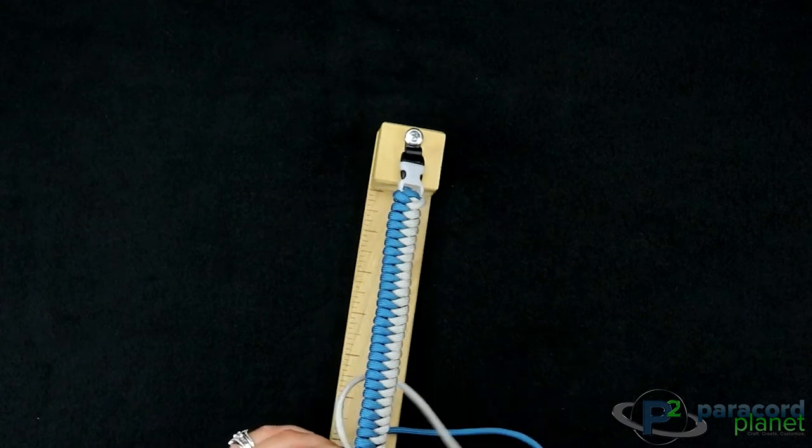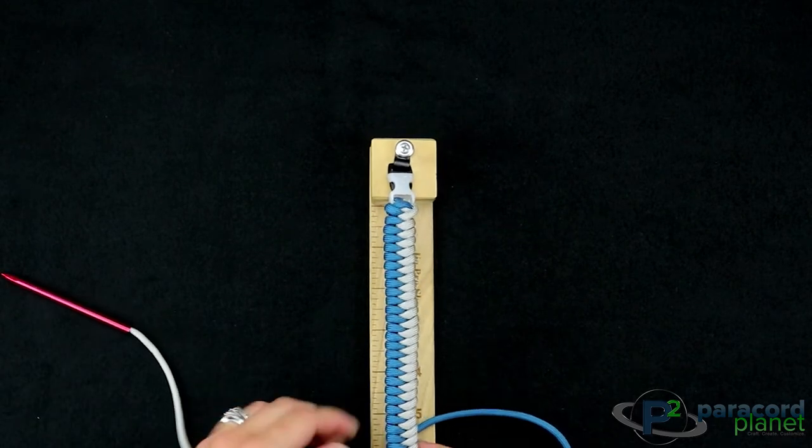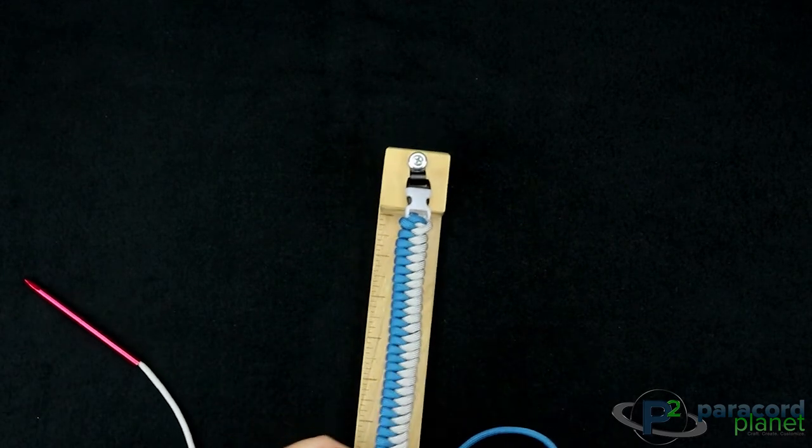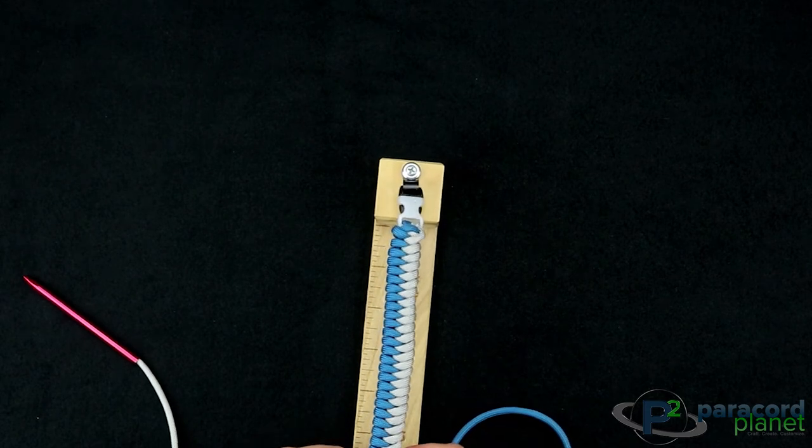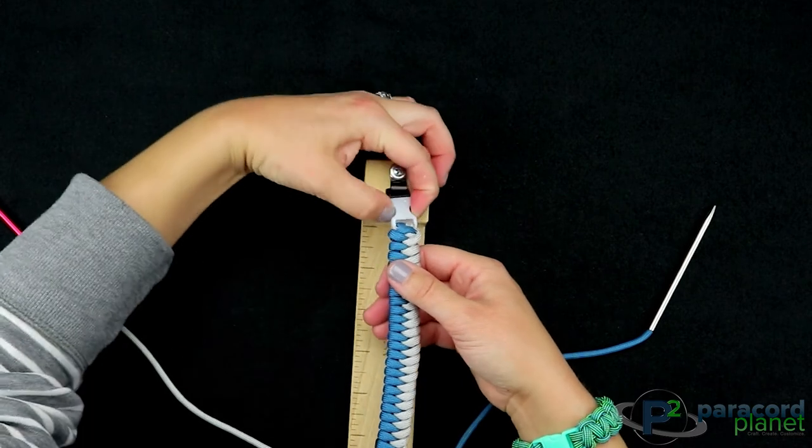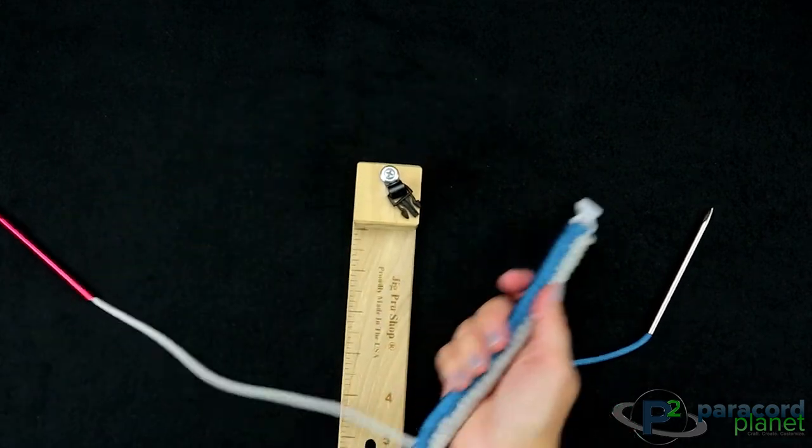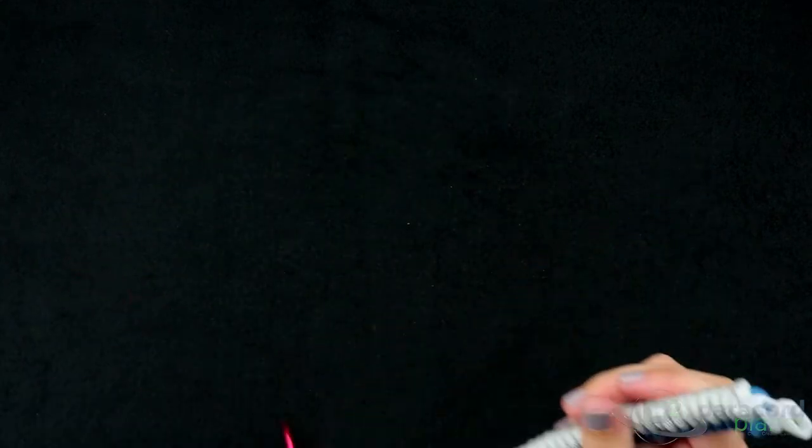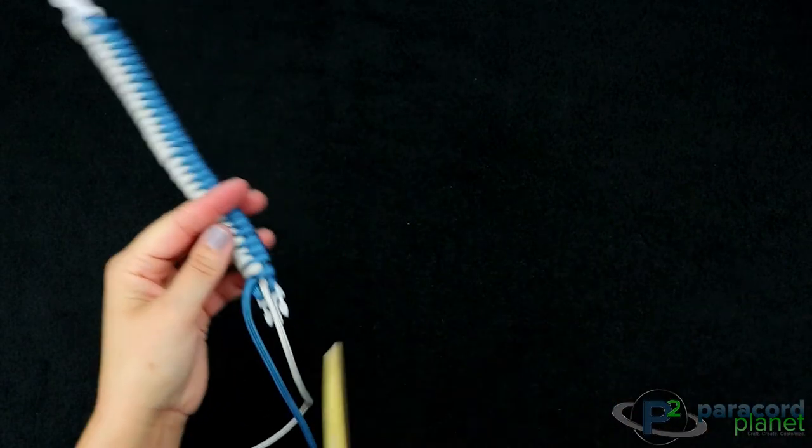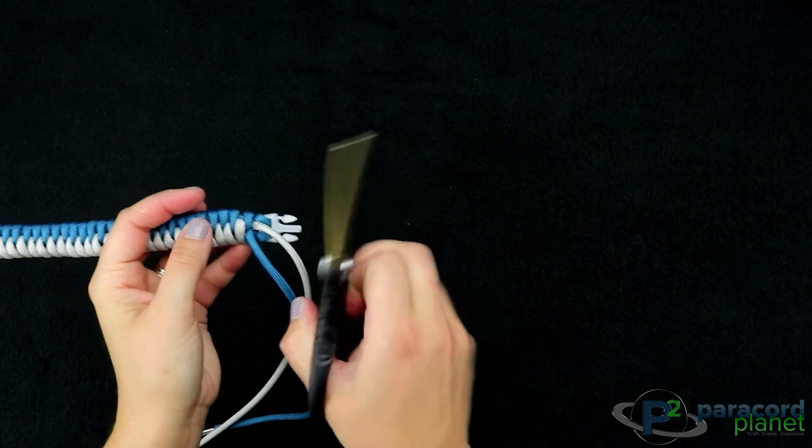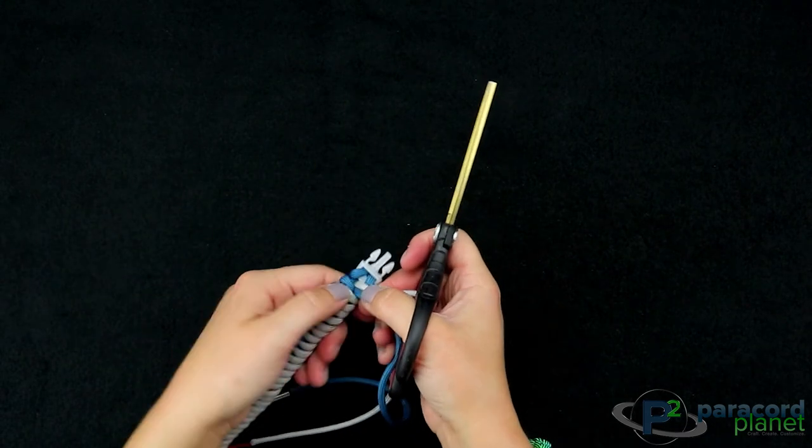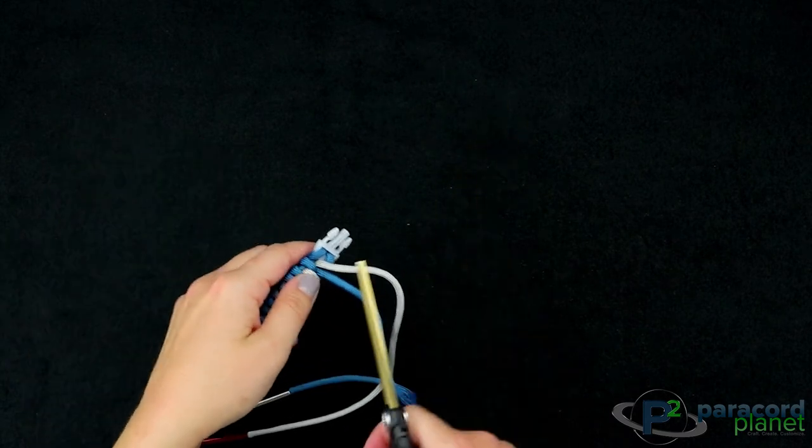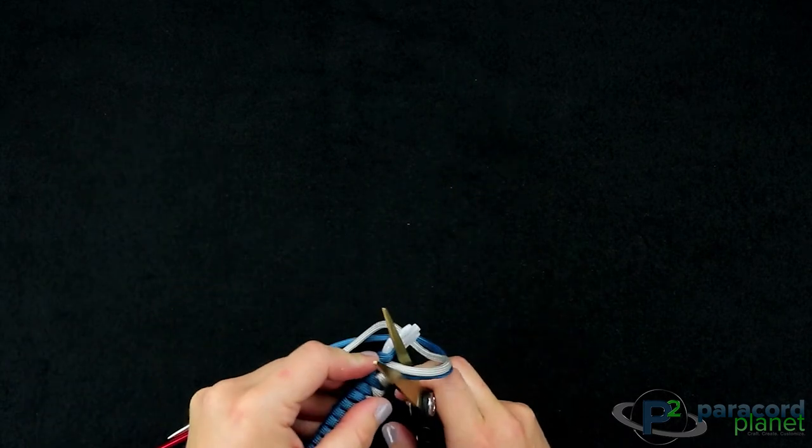This will be the last one here. These are staying nice and pretty snug in there. I'm going to take it off the jig, and then you will cut them off pretty close to here. Burn them, and if you do them at the same time you can kind of get the wax together or the cords melted together and they will not slip through your buckle.